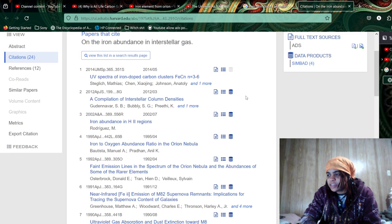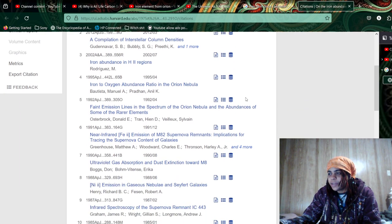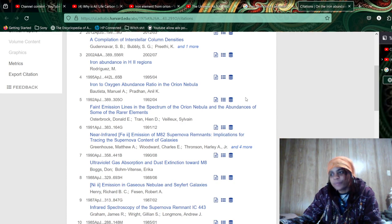Iron-oxygen abundance ratio in the Orion Nebula. Faint emission lines in the spectrum of the Orion Nebula and the abundance of some of the rare elements. Near-infrared emissions of M82 supernova remnants. Implications for tracing the supernova context of the galaxies. Ultraviolet gas absorption and dust extinction towards M82, but it might be M8.